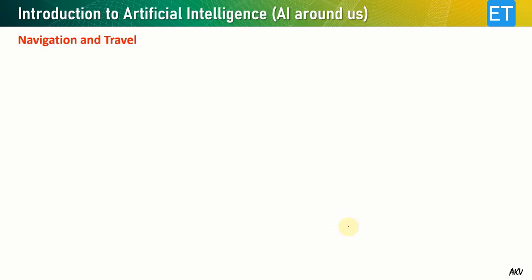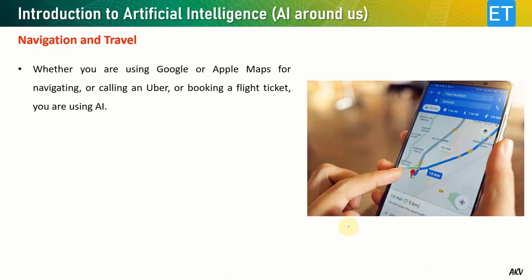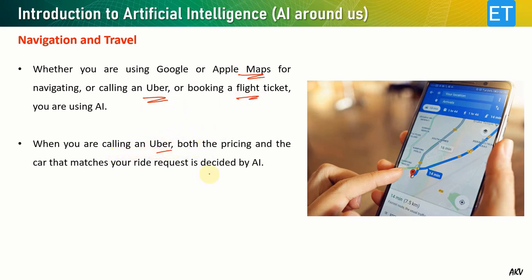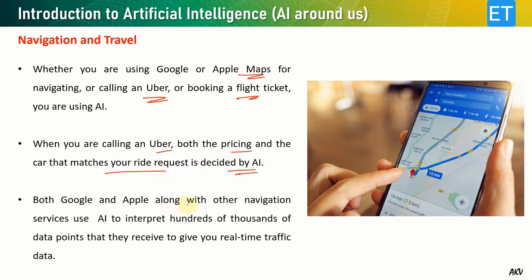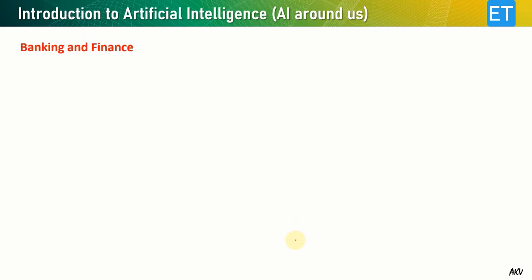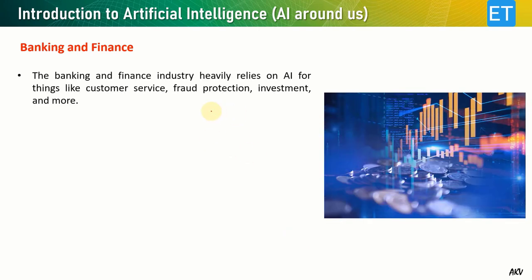Whether you use Google Maps or Apple Maps for navigation, or book a taxi or flight, AI is involved. When calling an Uber, both pricing and the car matched to your request are decided by AI. Google and Apple along with other navigation services use AI to interpret hundreds of thousands of data points to provide real-time traffic on their maps, highlighted with green, orange, and brown lines.